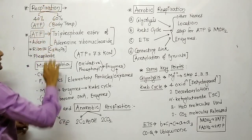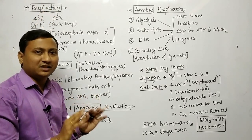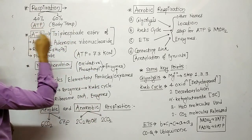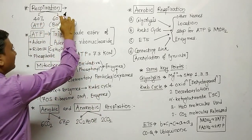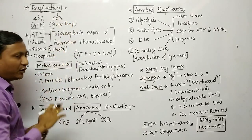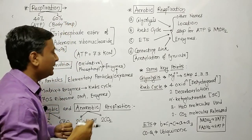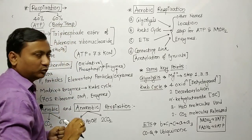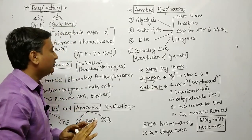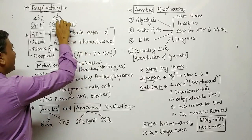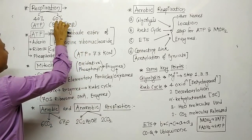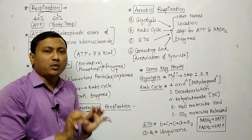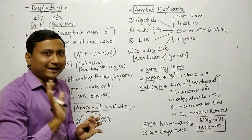So imagine that in respiration there is 100% energy released — 40% energy is stored in ATP. The remaining 60% energy is produced in the body as heat, which is used to maintain the body temperature at 37 degrees Celsius. So respiration is an important process for the production of energy.